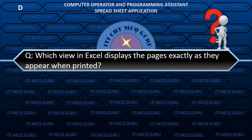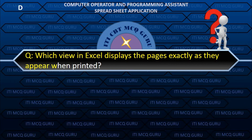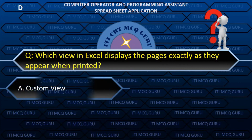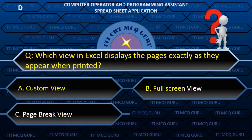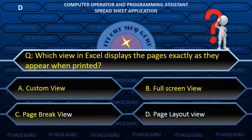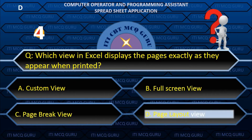Which view in Excel displays the pages exactly as they appear when printed? D. Page Layout View.